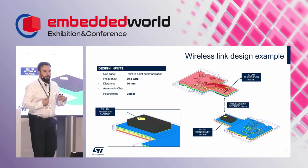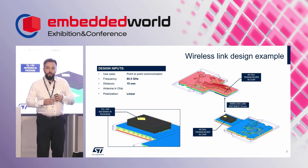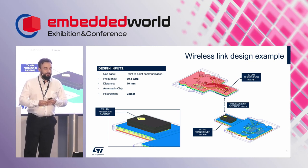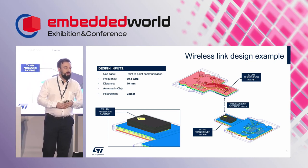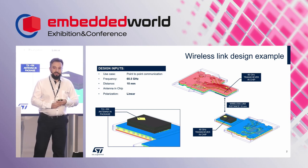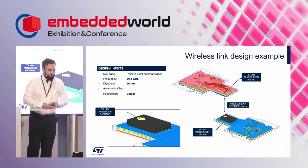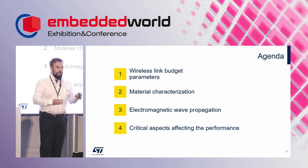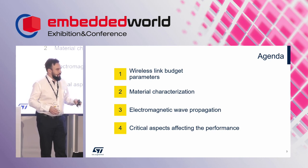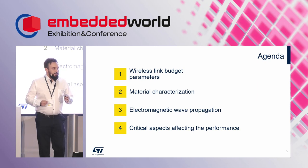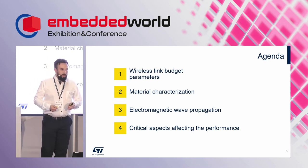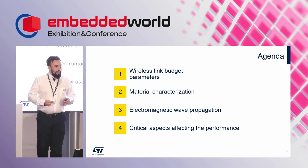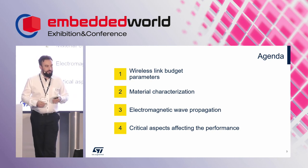I will use a design example: a wireless point-to-point communication link designed for 10 millimeters distance, working on the 60 gigahertz frequency band. Today I will go through four topics. First, I will remind you how to deal with wireless link budget parameters. Then I will show some typical methods for material characterization. Then I will briefly go into theory about wave propagation and comment on a few aspects affecting wireless performance.